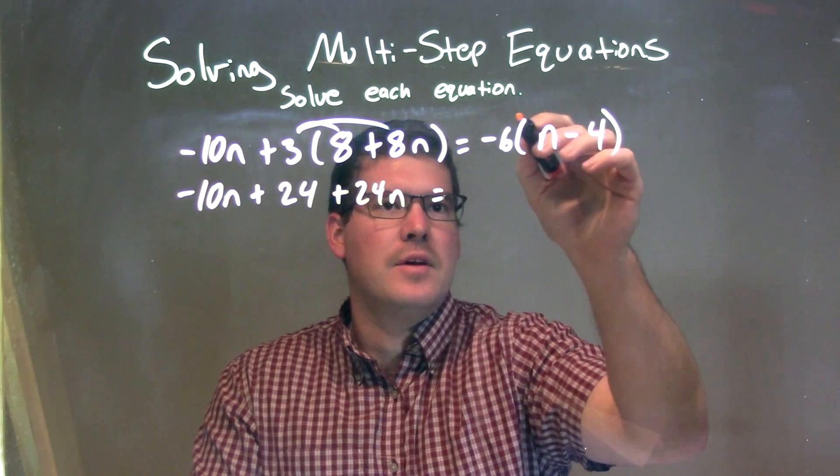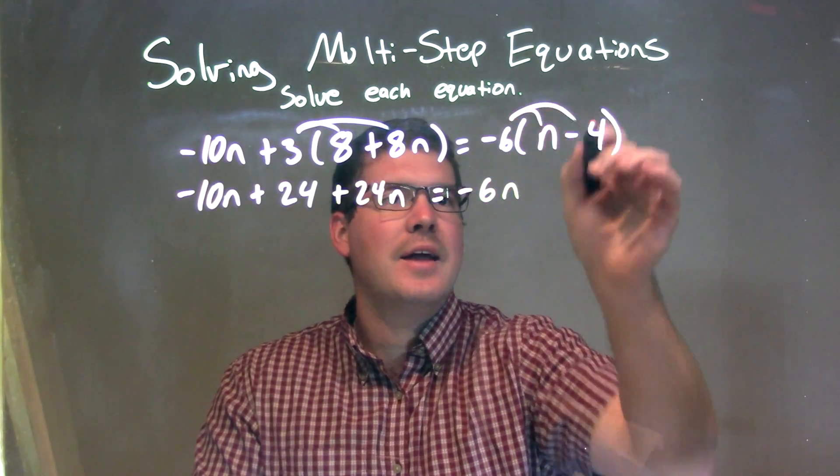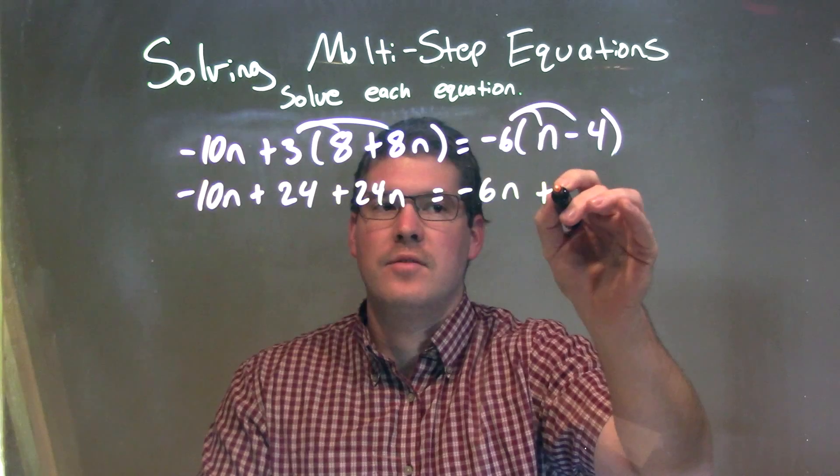We'll do the same thing with -6. -6 times n is -6n, and -6 times -4 is a positive 24.